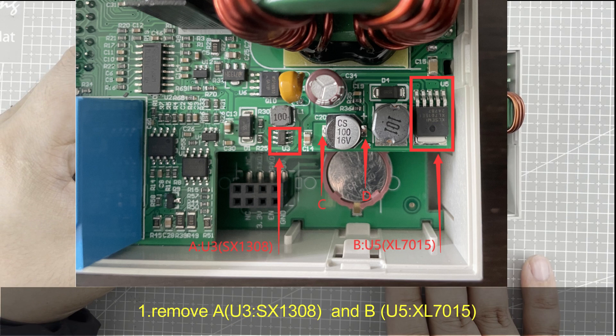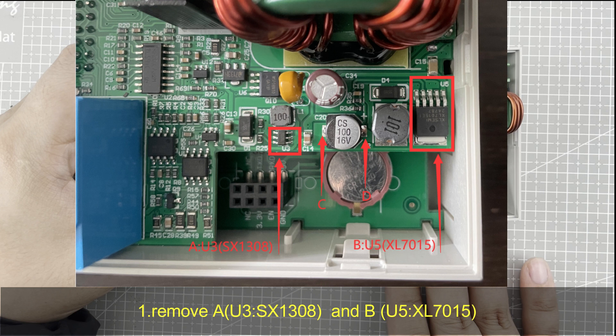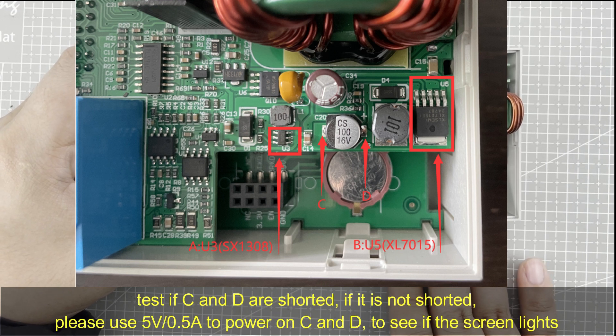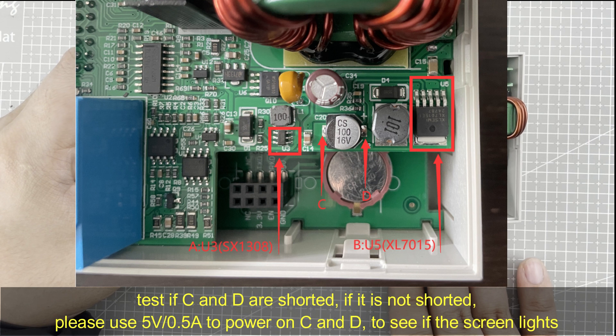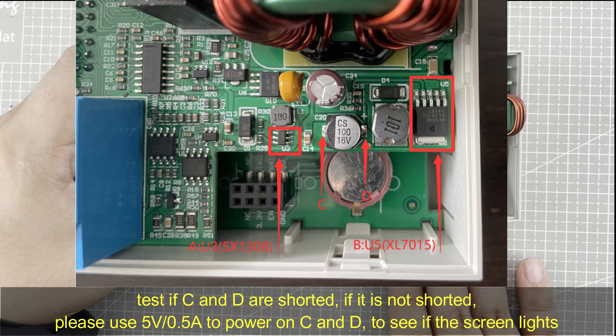Step 1 is remove the A and B chips U3 and U5. Then you test if C and D are shorted. If it is not shorted, please use 5V 0.5A to power on C and D to see if the screen lights.